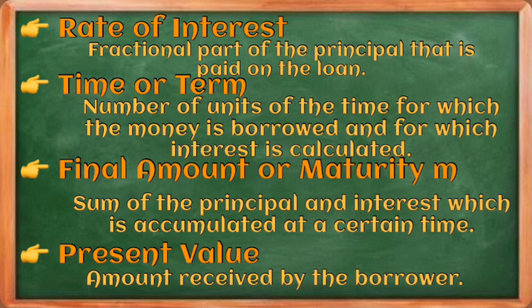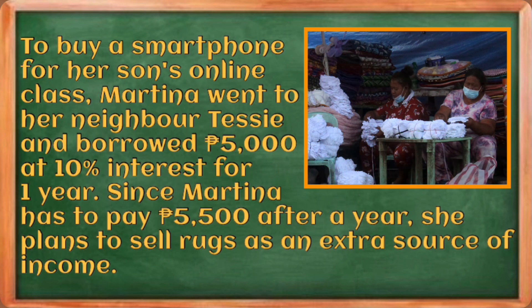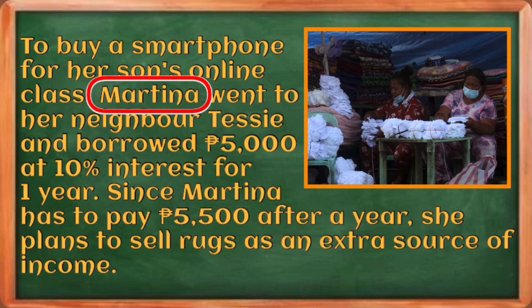The debtor or maker is the person who borrows the money for any purpose. In this situation, Martina is the debtor or the maker. The lender is the person or institution which loans the money.